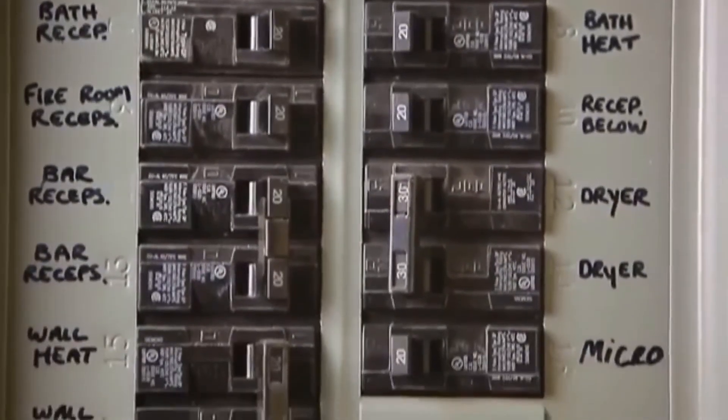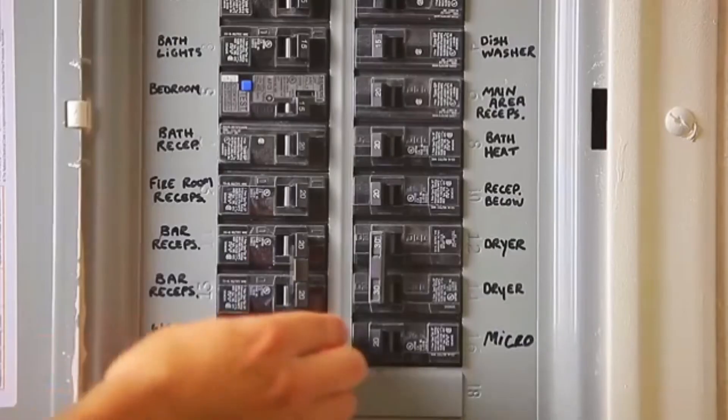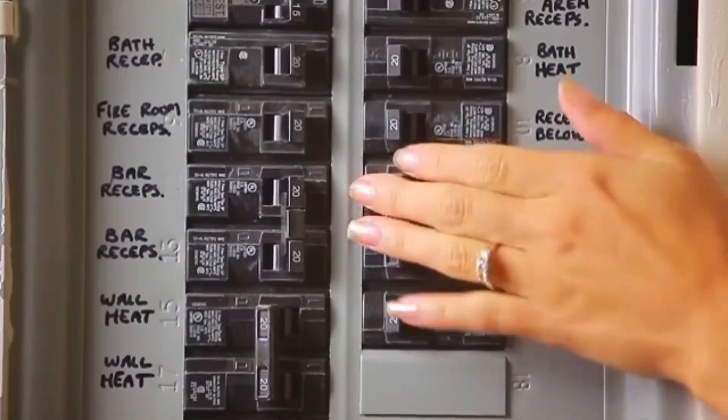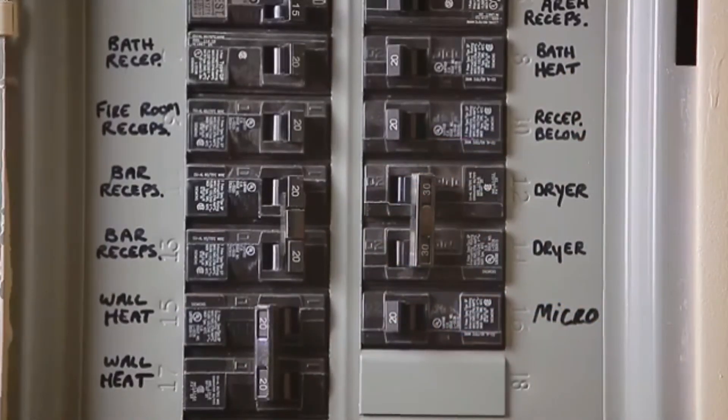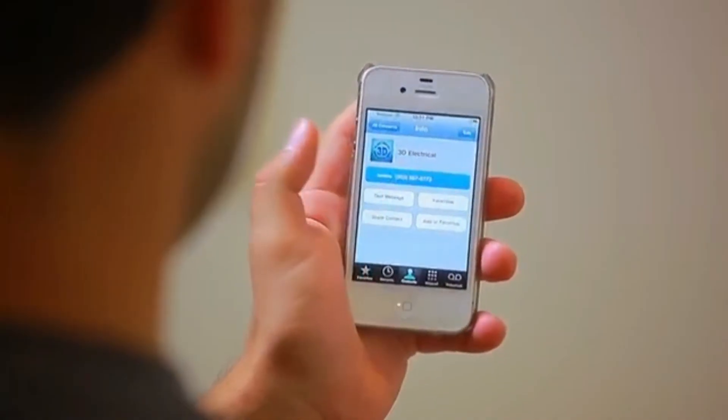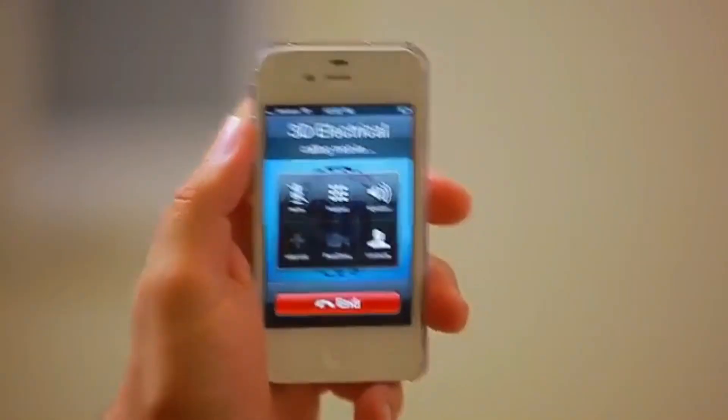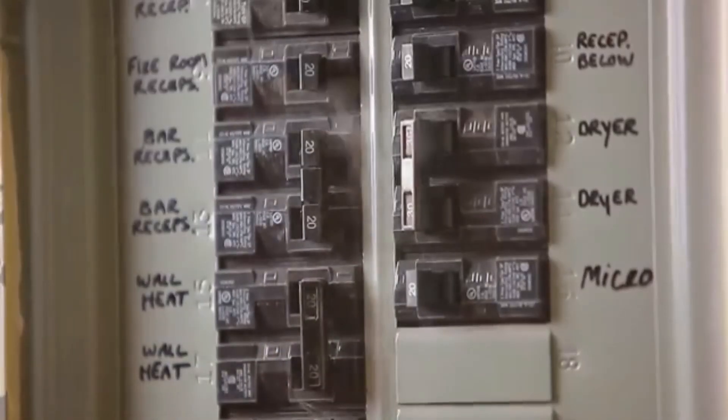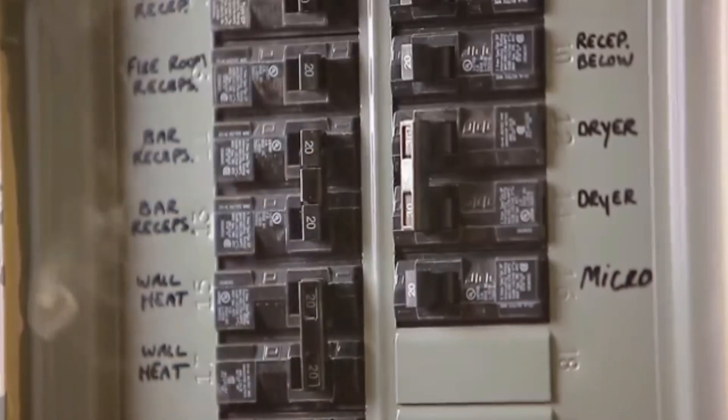Make sure your circuit breakers are clearly labeled. All members of your household should know how to shut off power at the main breaker in case of emergency. Call an electrician if your circuit breakers are hot to the touch or if the panel is emitting sparks, smoke or a burning smell.